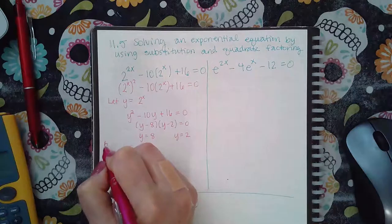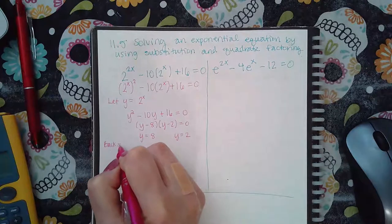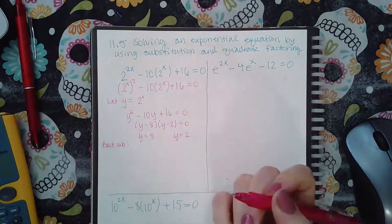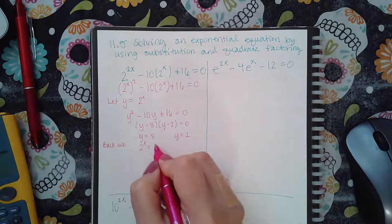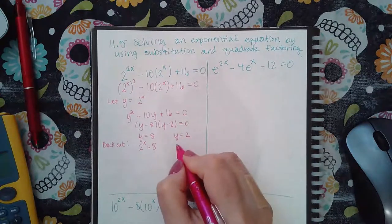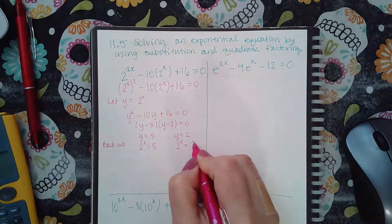And then you have to make sure that you go back and you back sub. So what did y represent? y represented 2 to the power x. So it's actually 2 to the power x that equals 8, and 2 to the power x that equals 2.